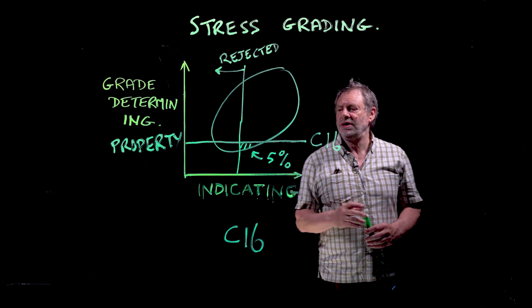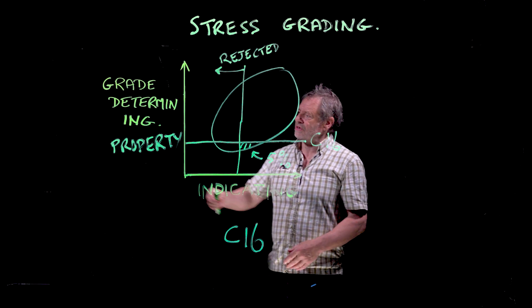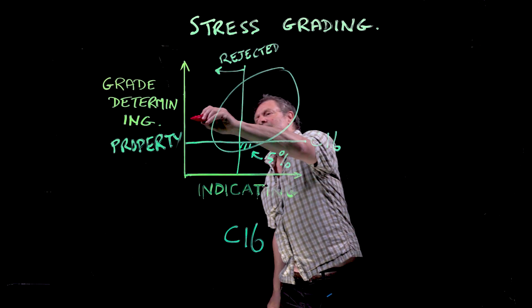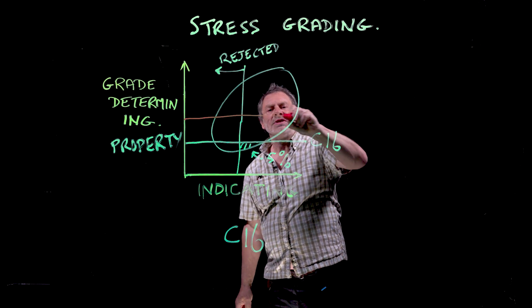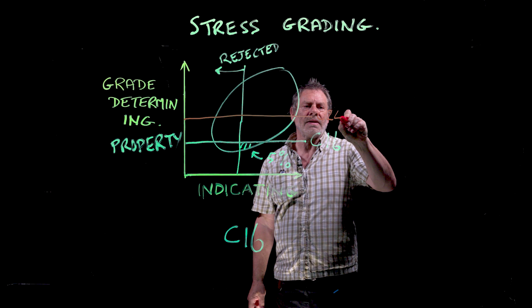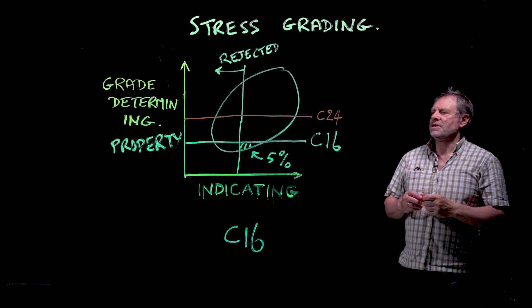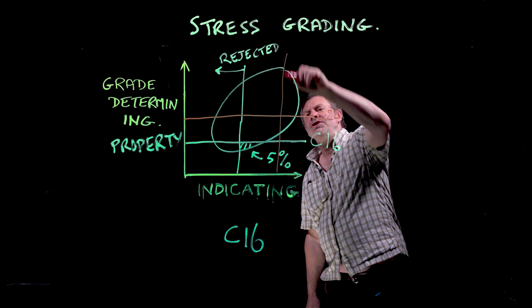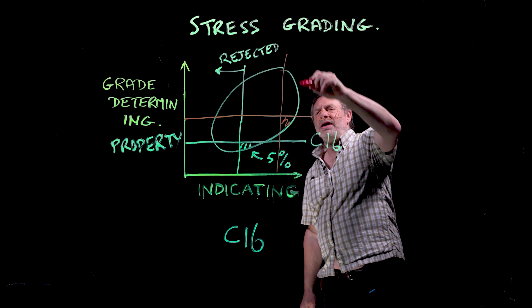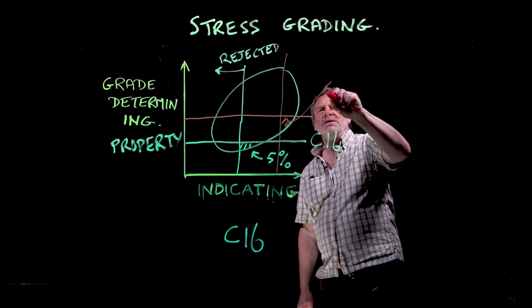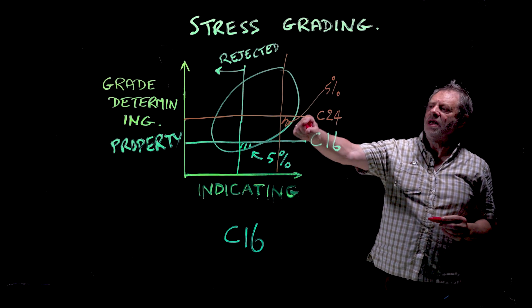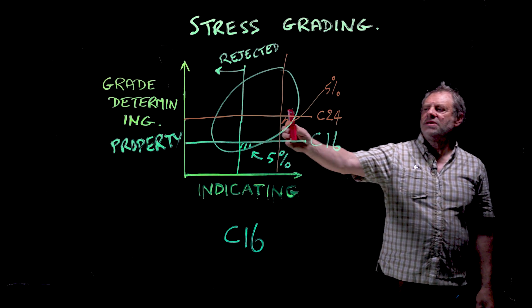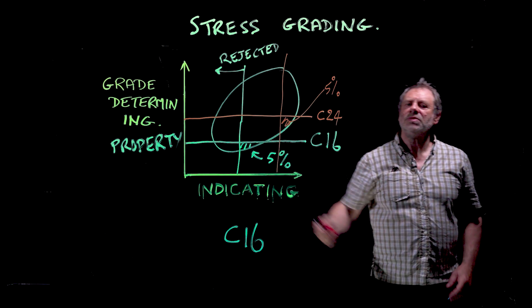That's how you choose where the indicating property is. Now if you go for a different grade determining property - let's say we go for C24, which is stronger timber - we have to move this indicating property so they end up in a situation where there is no more than five percent sitting below that value. As a result of changing from C16 to C24, we're actually rejecting a lot more timber.